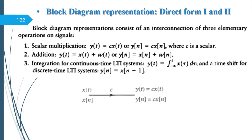Now we start afresh with the third and last part of Chapter 2: Block Diagram Representation — Direct Form 1 and Direct Form 2. Block diagram representation consists of an interconnection of three elementary operations: scalar multiplication, addition, and integration (for continuous time) or shifting (for discrete time). A diagrammatical explanation will help understanding better.